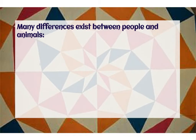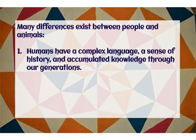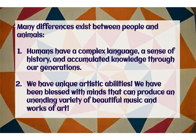Many differences exist between people and animals. First, humans have a complex language. There are many languages in our world. We have a sense of history. We know the past and we learn from it, hopefully. And we have accumulated knowledge through our generations. Stories and lessons that have been learned throughout many years.